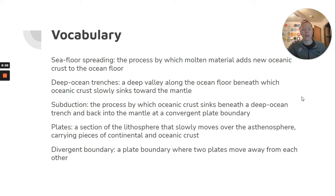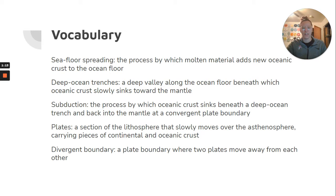Seafloor spreading is the process by which molten material adds new oceanic crust to the ocean floor. Deep ocean trenches are a deep valley along the ocean floor beneath which oceanic crust slowly sinks toward the mantle. Subduction is the process by which oceanic crust sinks beneath a deep ocean trench and back into the mantle at a convergent plate boundary. Plates are a section of the lithosphere that slowly moves over the asthenosphere, carrying pieces of continental and oceanic crust.